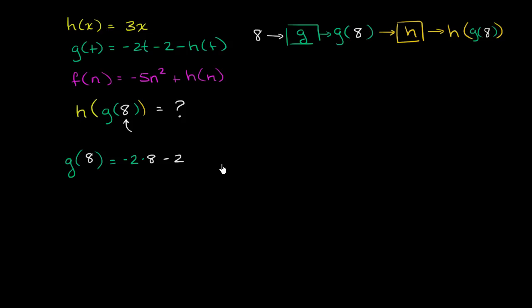Let me do it in the right color. Notice, to evaluate g of 8, all we did is everywhere we saw a t, we replaced it with the input 8. Now let's see if we can calculate this. This is going to be equal to negative 2 times 8 is negative 16, minus 2 is negative 18. So this equals negative 18 minus, what is h of 8 going to be equal to?